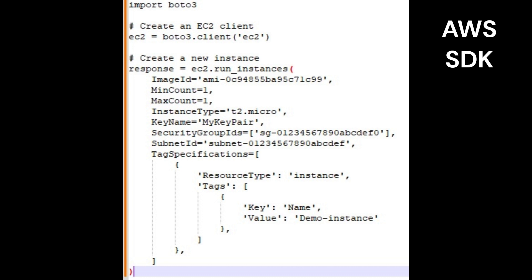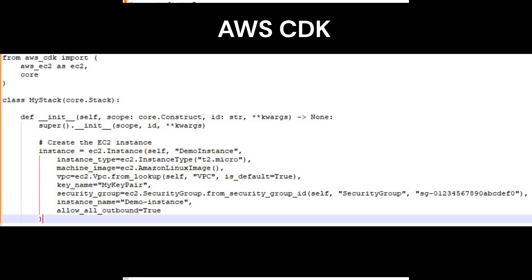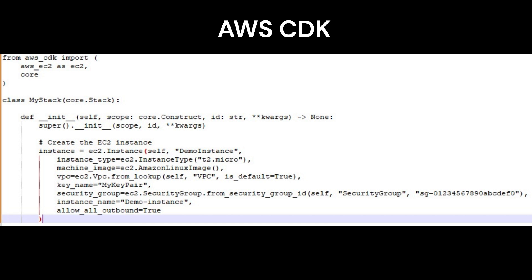Note that, as with the CLI command, you will need to replace the example values in this code with the appropriate values for your environment. The AWS Cloud Development Kit (CDK) is a framework for defining and deploying cloud infrastructure as code.